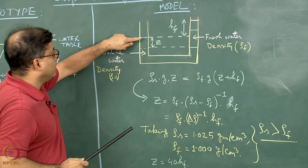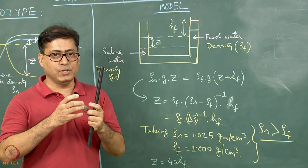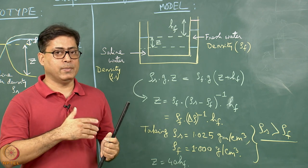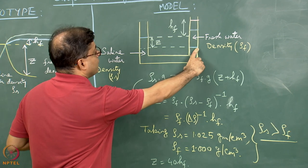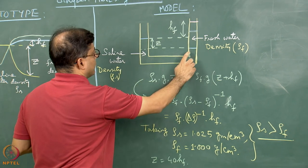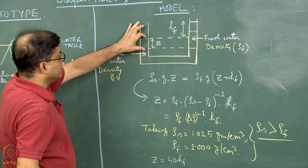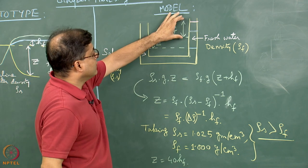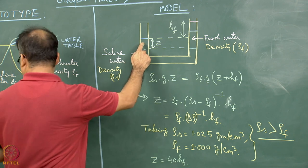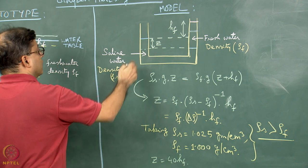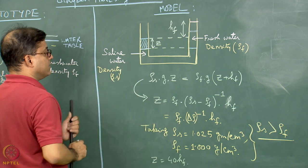Just like we did for isostatic balance — where a piece of wood floating in water achieves isostatic balance — a similar thing can be done in the geohydrological case. This blue line is the contact between the saline water and the fresh water. I can draw an imaginary dashed line that touches this tube. Say this height is equal to small z and this height is equal to hf.